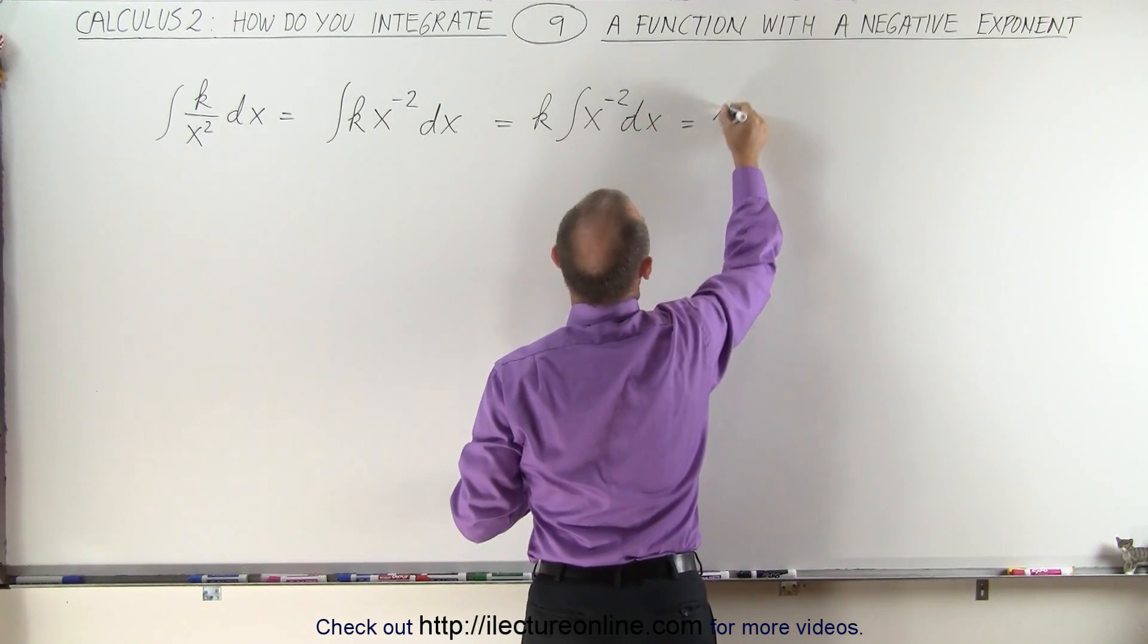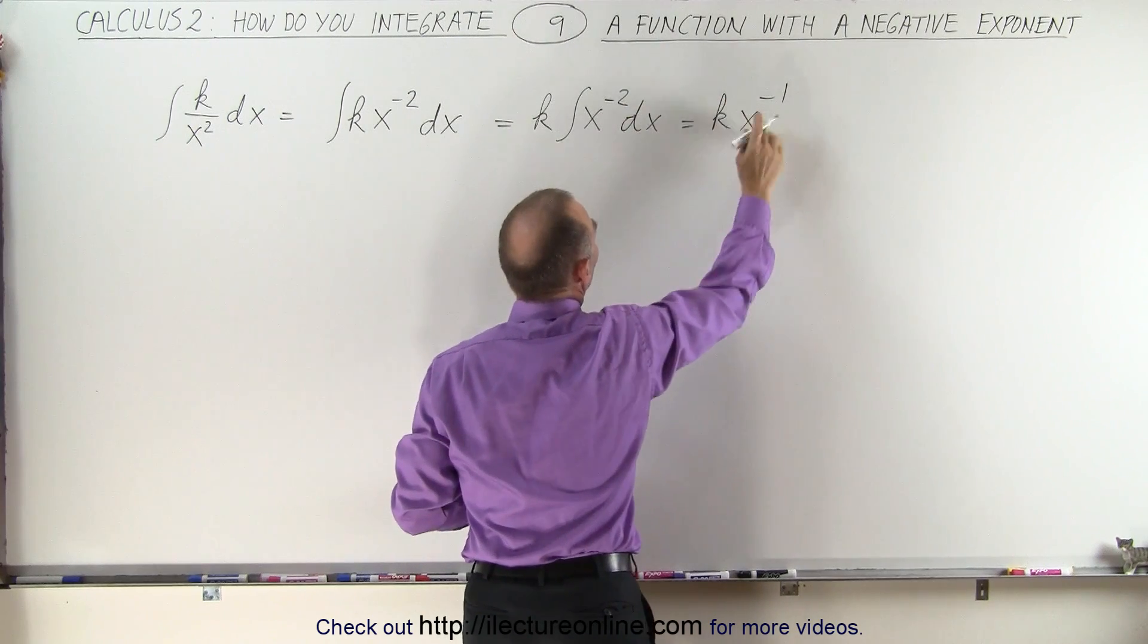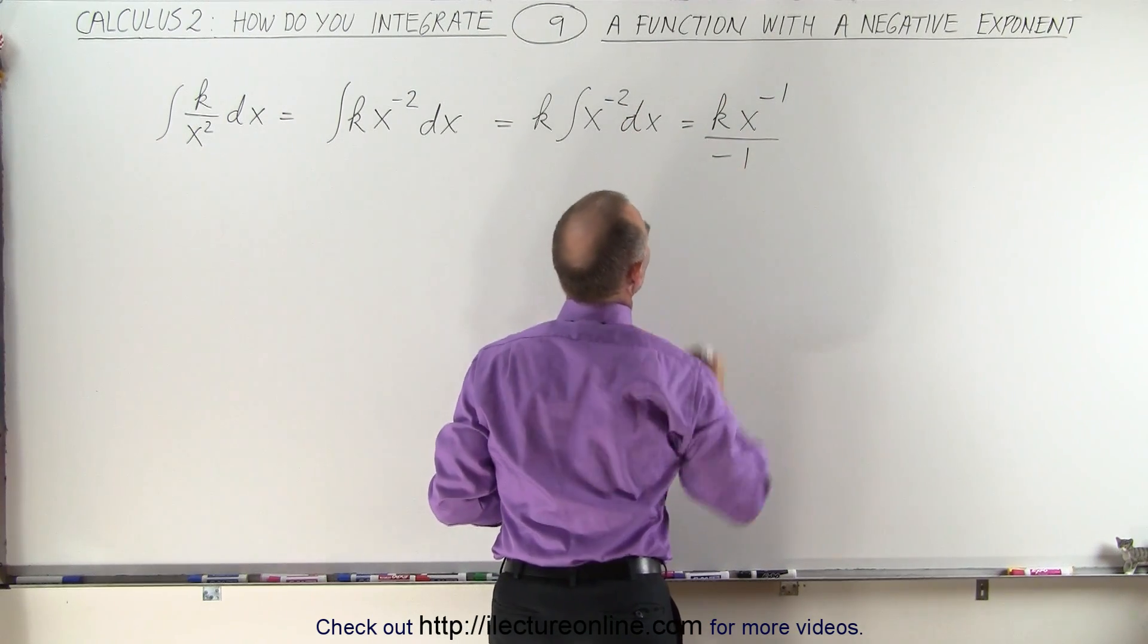And so this becomes k times x to the minus 1 power. So we add 1 to negative 2, we get minus 1, divided by the new exponent, minus 1.